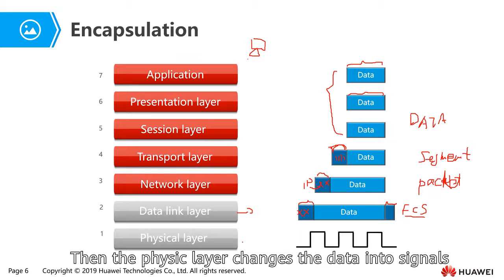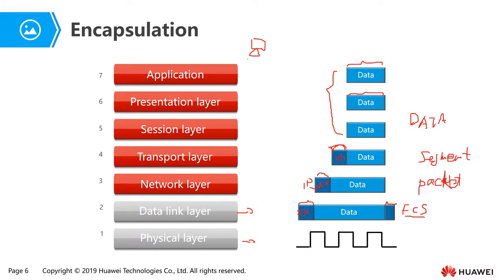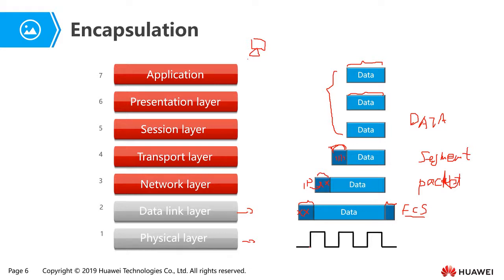Then the physical layer converts the data into signals — high level or low level voltage. This completes the encapsulation process.